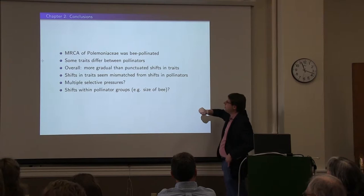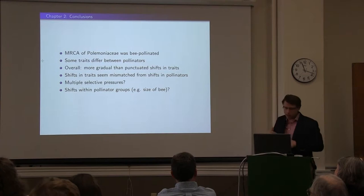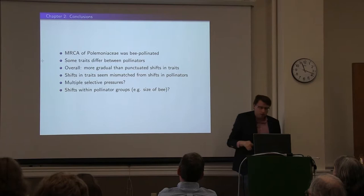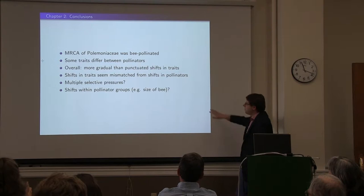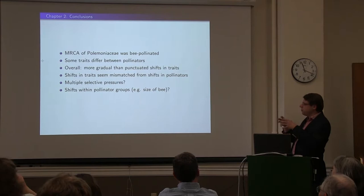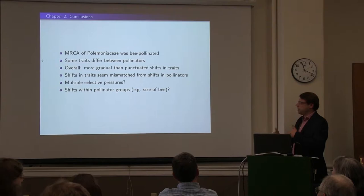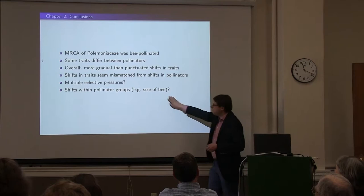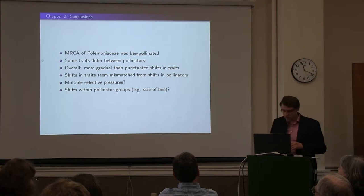In conclusion: the most recent common ancestor of Polemoniaceae is bee pollinated. Floral traits differ between groups of pollinators, but there is a lot of overlap. It appears that there are more gradual and punctuated shifts in traits that are also mismatched from shifts in pollinators. One possibility is multiple selective pressures — you have pollinators selecting for higher nectar content or longer flowers, but then abiotic factors such as precipitation selecting against water loss from larger flowers or investing more sugars in nectar. There may also be shifts we didn't detect within pollinator groups, such as large bees to small bees.